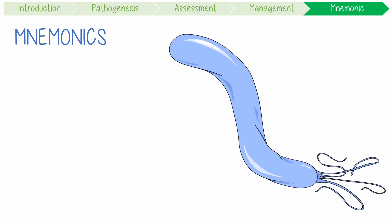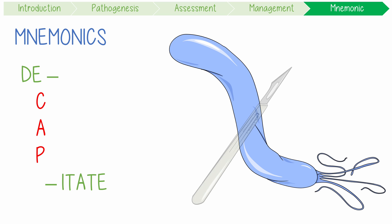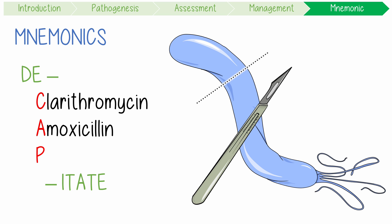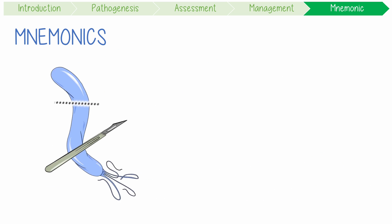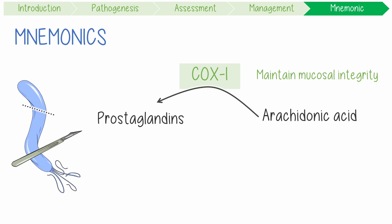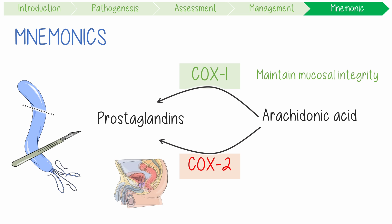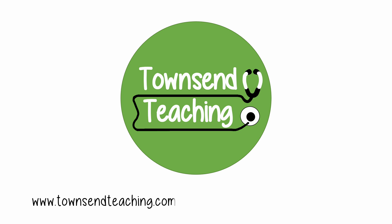A helpful mnemonic to recall triple therapy: 'Doctors should decapitate H. pylori' — standing for Clarithromycin, Amoxicillin, and PPI. Also remember that COX-1 is good, gastroprotective, and normal in our stomach, but having two COX is not a good sign — that's the inflammatory COX-2. This is why COX-2 selective NSAIDs like celecoxib cause much less mucosal damage.